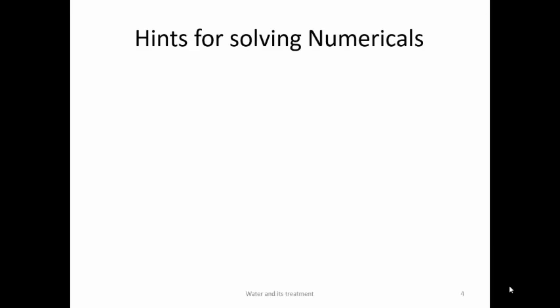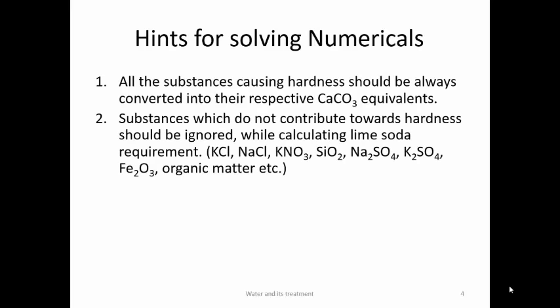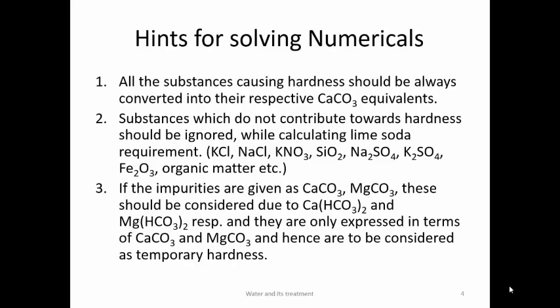For lime-soda numericals, remember: (1) All hardness-causing substances must be converted to CaCO₃ equivalents. (2) Substances like KCl, NaCl, KNO₃, SiO₂, Na₂SO₄, K₂SO₄, Fe₂O₃, and organic matter are not hardness-causing and should not be considered in calculations. (3) If impurities are given as CaCO₃ or MgCO₃, consider them as due to Ca(HCO₃)₂ or Mg(HCO₃)₂ — treat as temporary hardness.